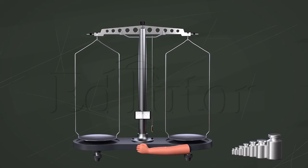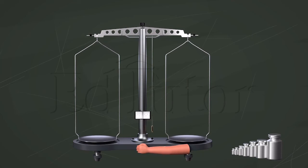Next, we turn the arresting knob to bring the beam back on its supports and place the given object, the stone, on the left pan to find its mass.